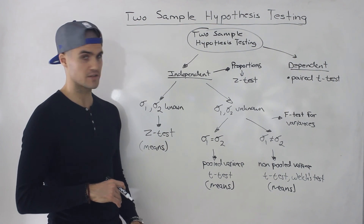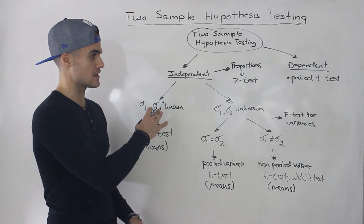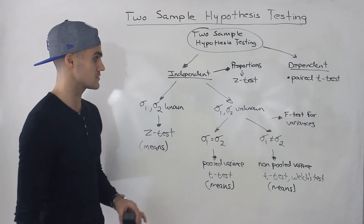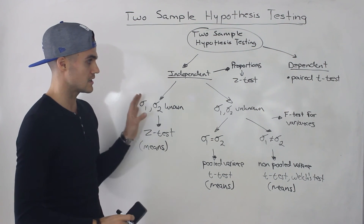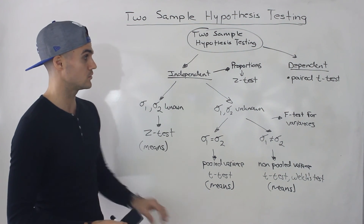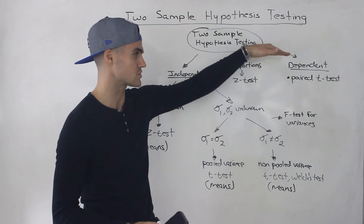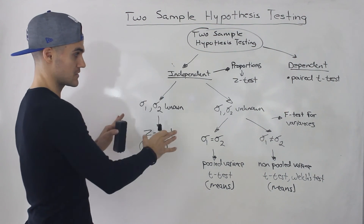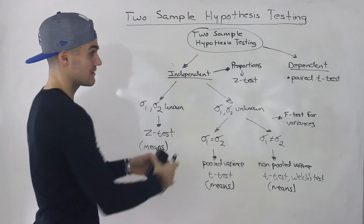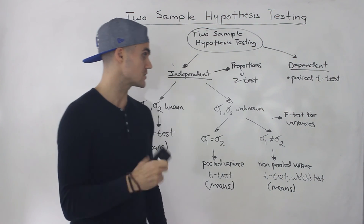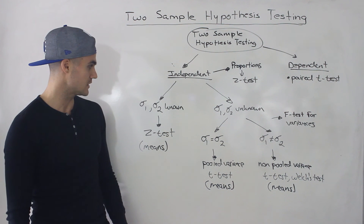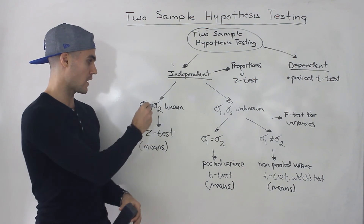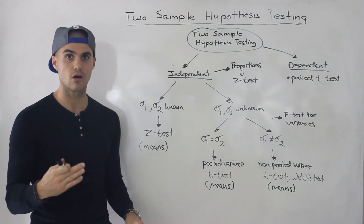That's pretty much the summary — what we're going to cover in the next few videos, with a video on each of these cases. We'll see how many examples we can get through. The paired t-test will be more toward the end. You'll be working more with independent samples, as you can see from the diagram. In the next video, I'm going to do an example of a Z-test on two independent samples where the population standard deviations are known.